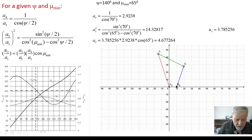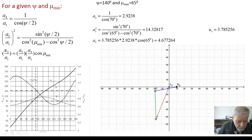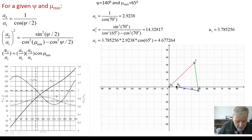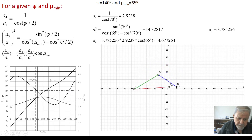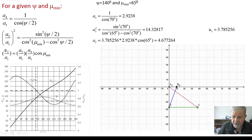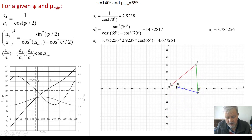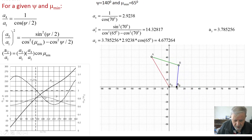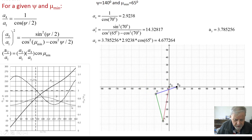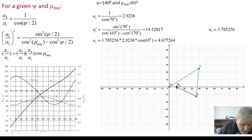Looking at the transmission angle: it has the same deviation in both cases, 65 degrees — a 25-degree deviation from 90 degrees — so it deviates from 65 to 115 degrees. This is the deviation of the transmission angle, and this is how the output link angle changes.